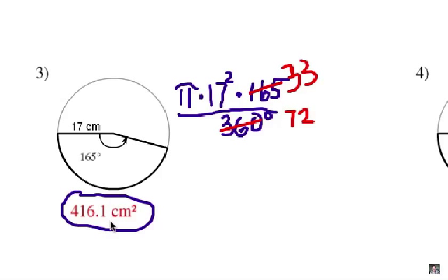Now, you might be a little bit off from that, because if you're using the full value of pi on your calculator and not just 3.14 — carrying it out further to more decimal places — then you might get a slightly different result. But basically, to the nearest tenth, that's the answer.